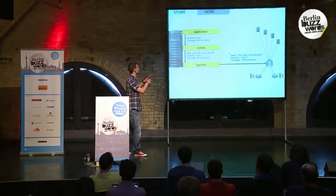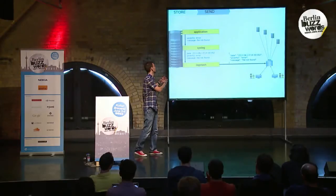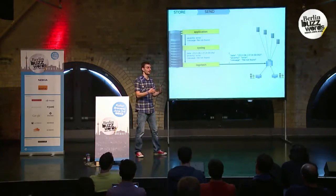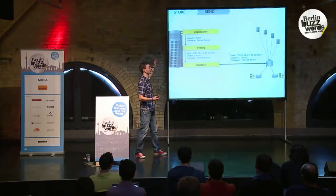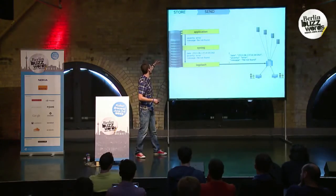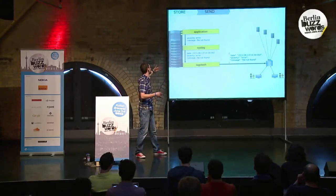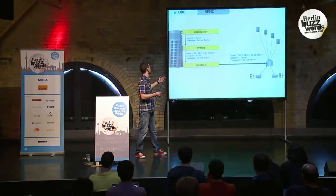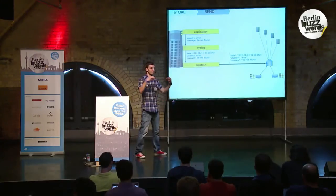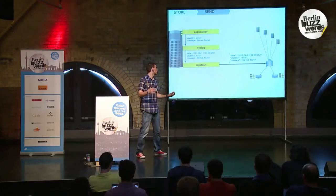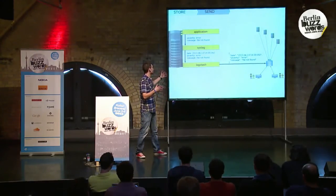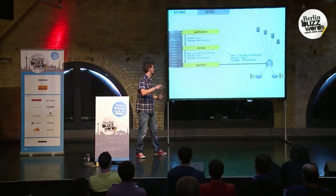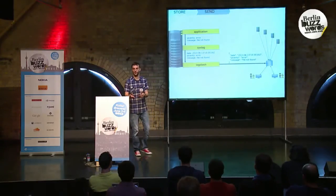Let's zoom in a bit more. For example, if you have your application logging to syslog, out of your syslog daemon you will get the things you log from your application, and also stuff like the date, the hostname, and so on — that's a standard format. Logstash gets that syslog and puts it in a nice JSON and sends it over to Elasticsearch.